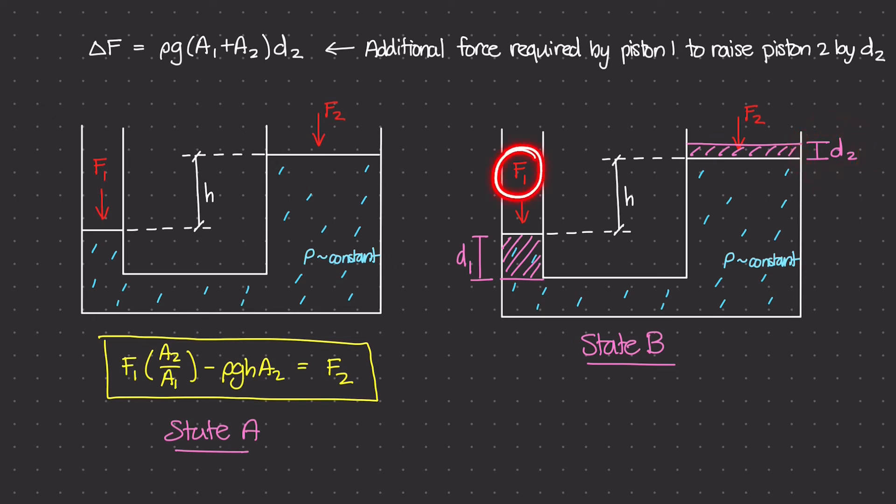We have a small force in a small area really pushing down by a large distance, this D1, and that's able to push force 2, which is a very big force, up by just a small amount, D2.